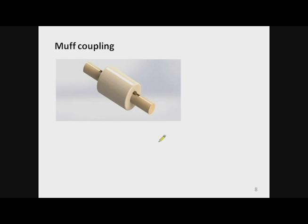In a muff coupling, there are two shafts joined with the help of a muff — this cylindrical part is the muff. The two shafts are connected to this muff through keys. There is one input shaft and one output shaft; when power is transmitted from the input to the output shaft through the key and the muff, the shaft and muff are subjected to torque.